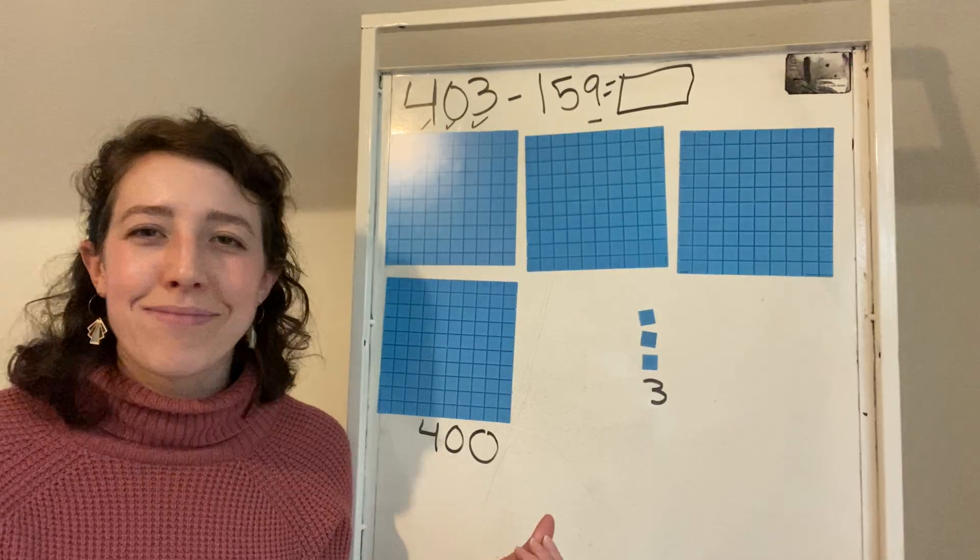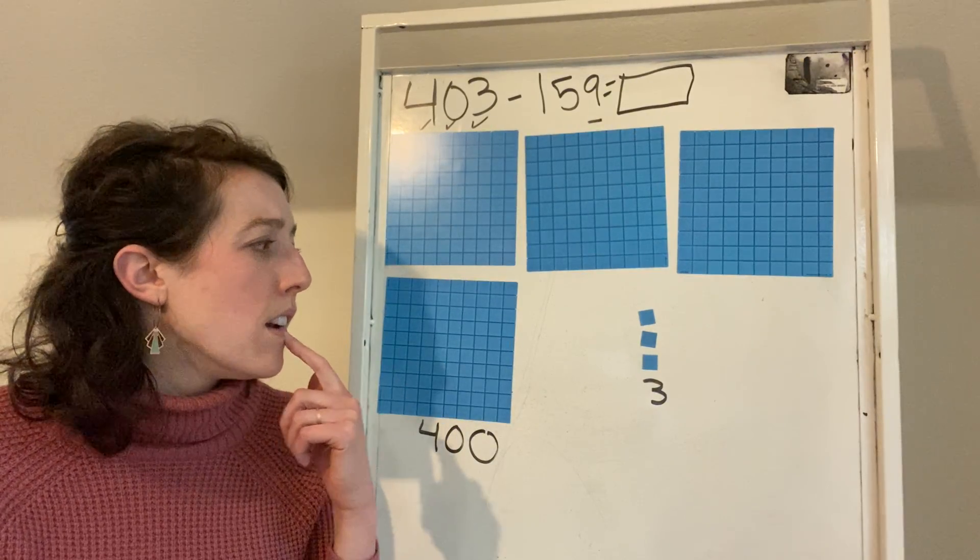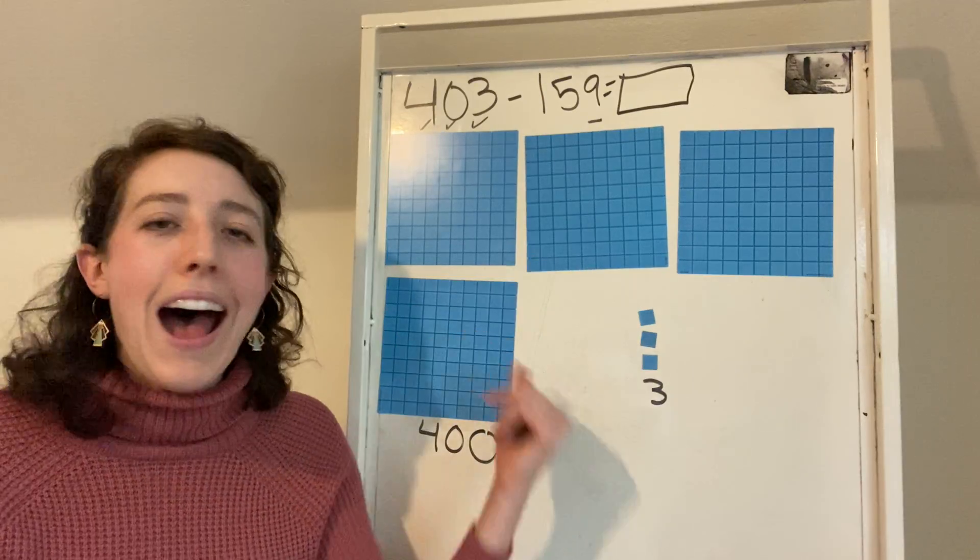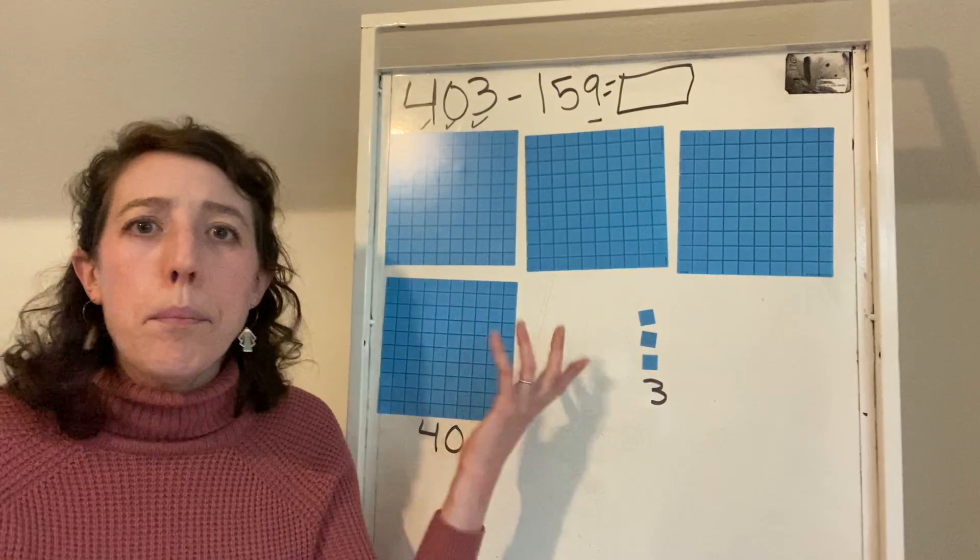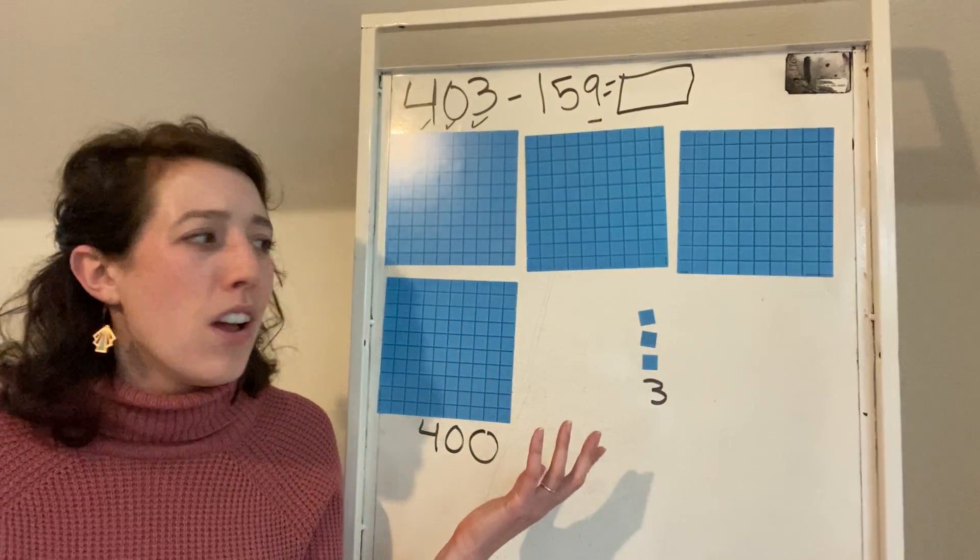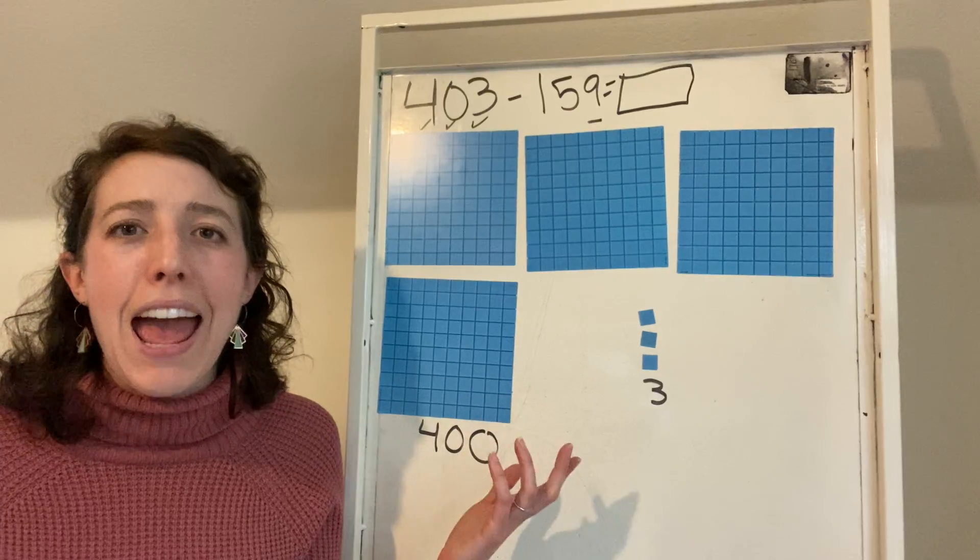Hmm. Are you back with me? So I'm thinking, usually, I should get my ones from my 10. But I don't have any 10s. So if I don't have any 10s, where would I look next?